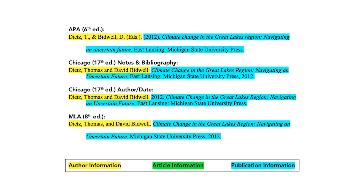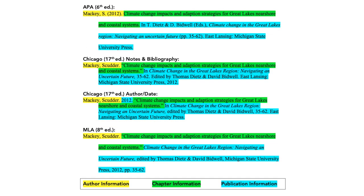Here I've done the same thing, only now the citation is for a book. Generally speaking, books are going to follow the same pattern. Notice that the book's title, however, is considered publication information. If I was looking for only a chapter in a given book, the chapter information would appear where the article information appeared in my first example.